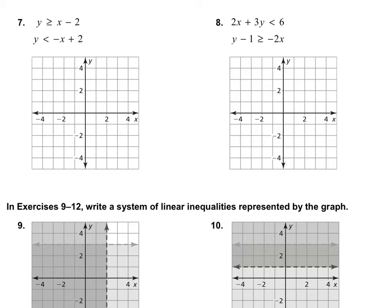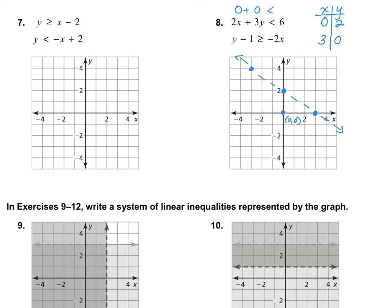Let's take a look at number 8. I noticed that 6 is divisible by 3 and by 2, so the easiest way to graph this is to find the x and y intercepts. When I plug in 0 for x, I get 3y is less than 6 — so y intercept is (0, 2). When I plug in 0 for y, I get 2x is less than 6 — so x intercept is 3. I need a dashed line because it's less than and not less than or equal to. Plugging in (0, 0): 0 plus 0 is less than 6 — true — so I shade toward that point.